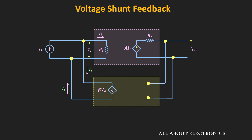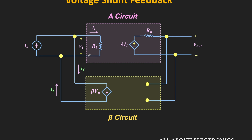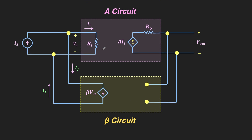This is the ideal structure of the voltage-shunt feedback amplifier. Here, the A circuit shows the basic trans-impedance amplifier block, while the β circuit shows the ideal feedback block. Here, Ri is the input impedance of the basic amplifier, and Ii is the input current. On the output side, this input current Ii is amplified by the gain of this amplifier, and we get a voltage as the output.